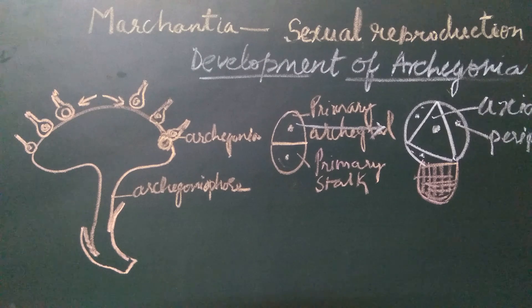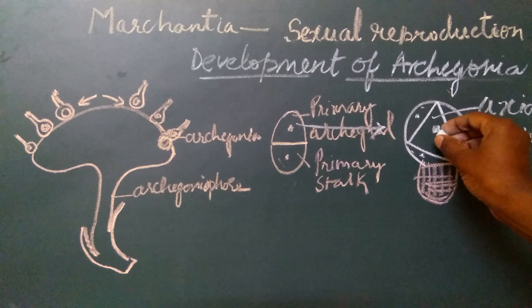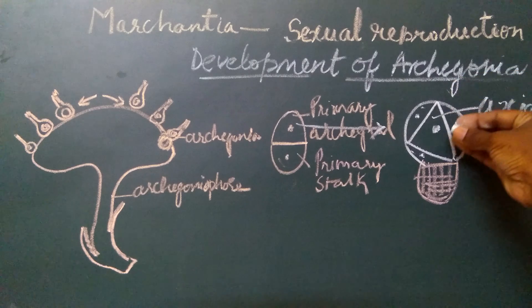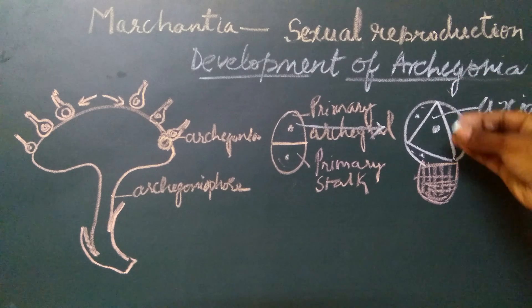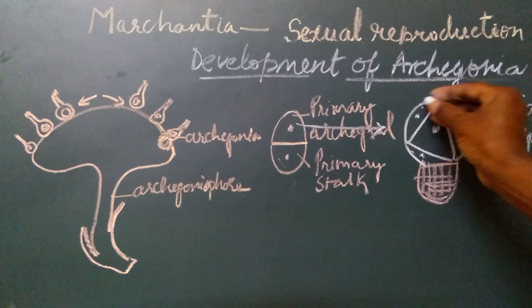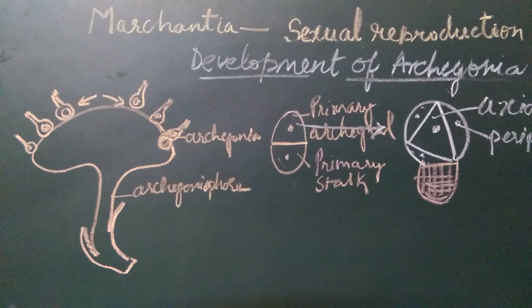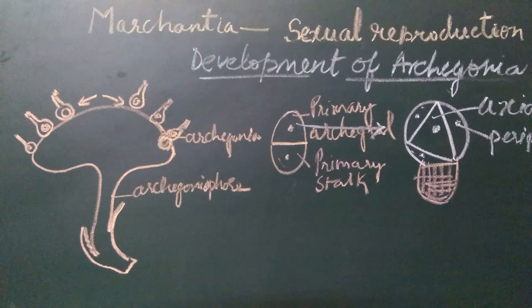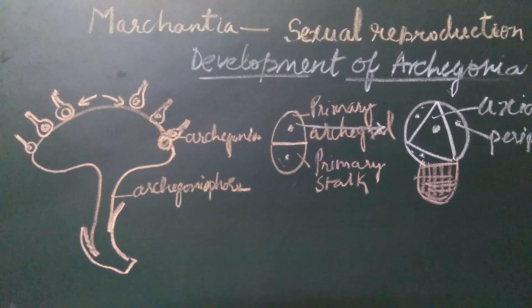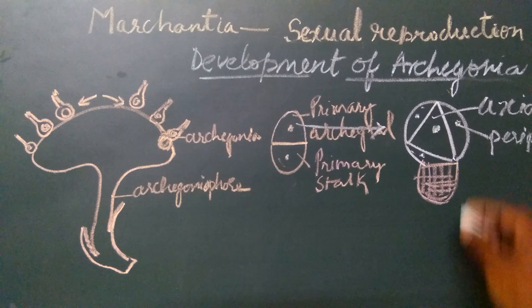The central axial cell will divide to form the neck canal cells, the venter canal cell, the cover cells, and the egg. Whereas the peripheral cells will divide to form the wall of the neck and the wall of the venter. We will first see how the peripheral cells divide to develop a venter wall and a neck wall.